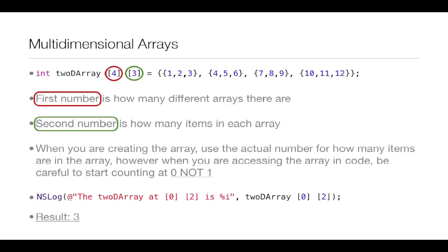It's fairly easy to remember the start-at-index-zero rule for a regular array, but when it's multi-dimensional it can get confusing. If we do an NSLog on this data, we might say '2D array at index zero, index two is %i' and pass in '2D array at index zero, index two'. Going to index zero — the first array — and then counting index zero, index one, index two, we end up at three, and the result is three. That's how 2D multi-dimensional arrays work.